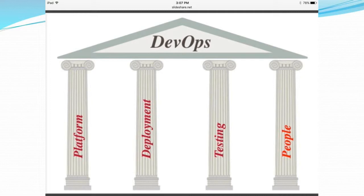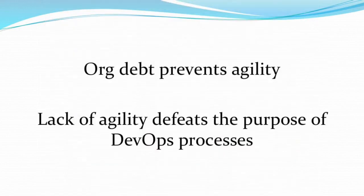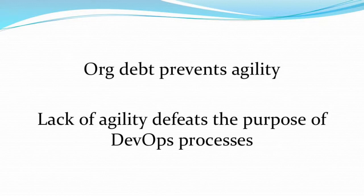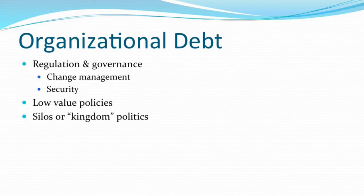IT itself touches on each one of these things. Organizational debt represents the barriers that are preventing the agility you need in order to modernize your application delivery pipeline. It's very difficult to be an agile organization within a waterfall one — you end up working at cross purposes against each other. So let's take a look in depth at what organizational debt is.